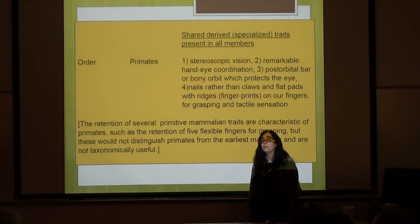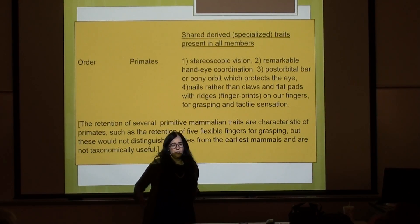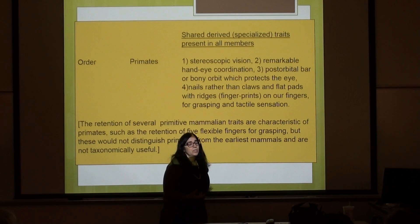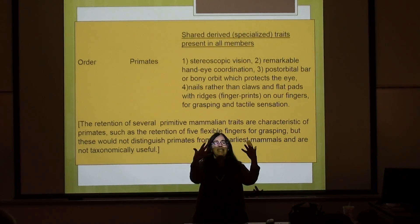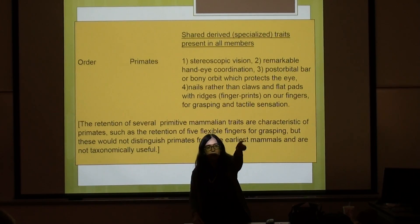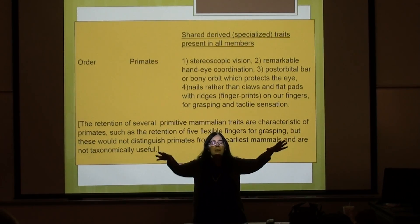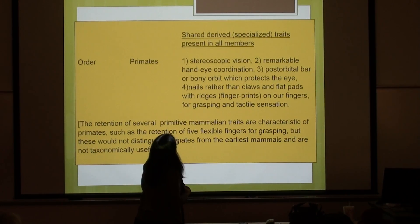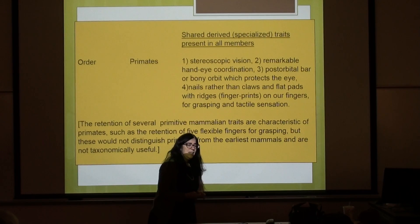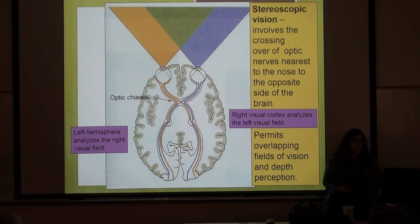We do have traits that we share with bush babies, lorises, lemurs, monkeys, and apes. The very most important one has to do with the perception of the world: stereoscopic vision. The way we perceive our world through vision is extremely important. Stereoscopic vision gives you depth of perception — I can tell that the people in the back row are further away than those in the front row. My brain is constantly telling me how far things are, and I can see a three-dimensional world. This stereoscopic vision is critical and unique to primates.